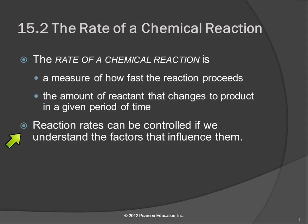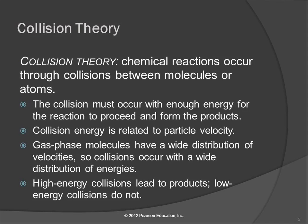We can control reaction rates if we understand the factors that influence them, and this is one of those aspects of chemistry that's very practical. If you're in industry and you need a chemical reaction to produce your product, you're going to care a great deal about how fast that reaction proceeds. To explore this, we have to talk about collision theory, which explains things we observe about reactions between molecules or atoms.